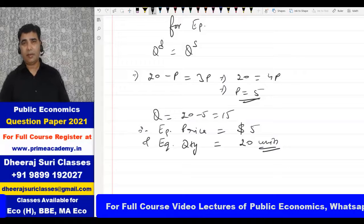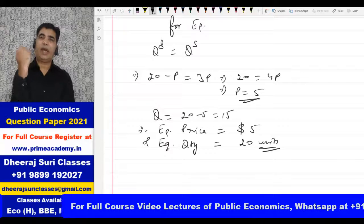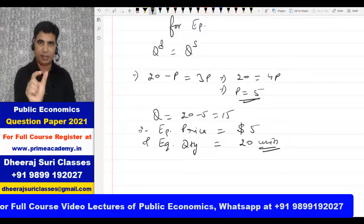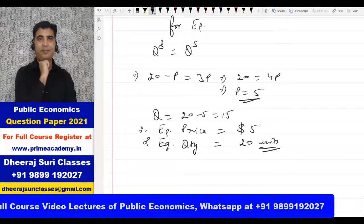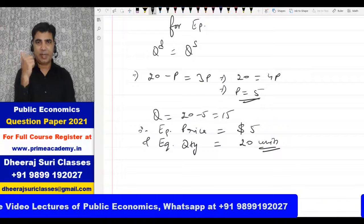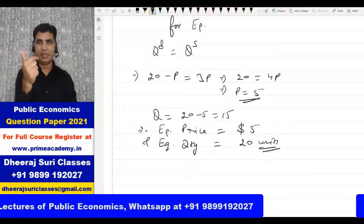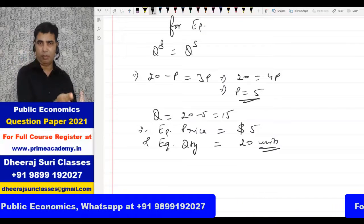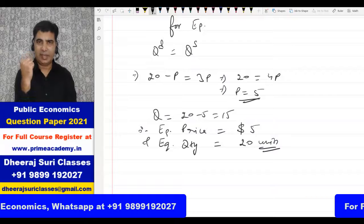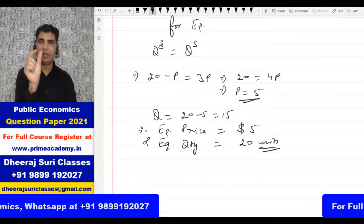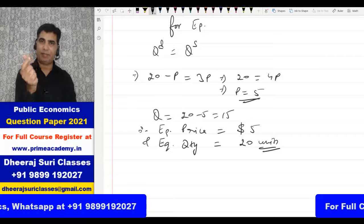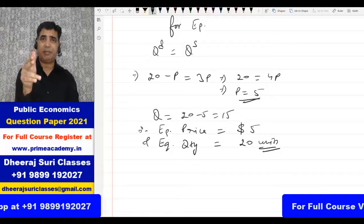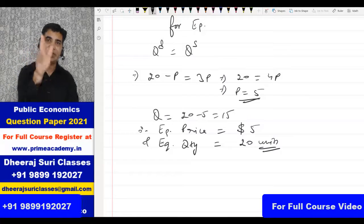Now a $4 tax is added on sellers. Remember, when a tax is added on buyers, we replace P with P plus T in the demand function. When a tax is added on sellers, we modify the supply function replacing P with P minus T. Since the tax is on sellers, the supply function becomes QS = 3(P minus T).